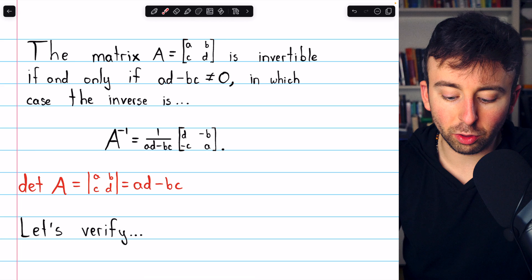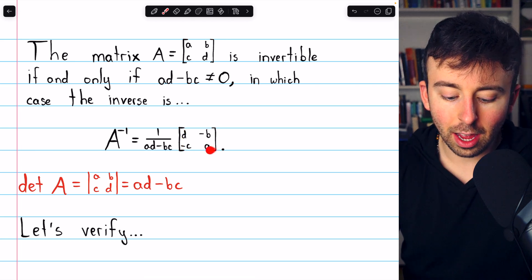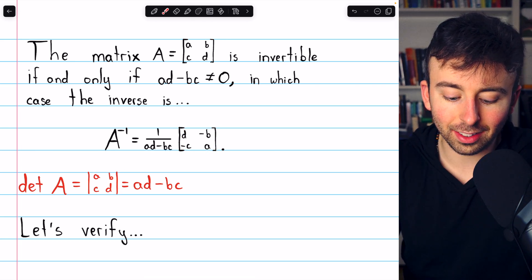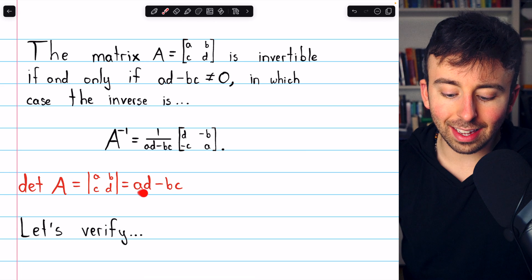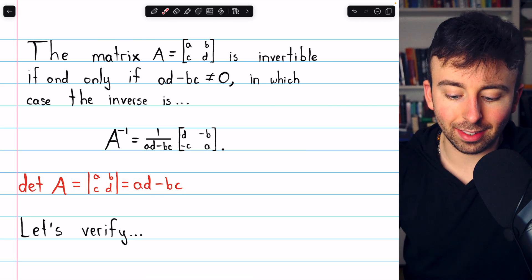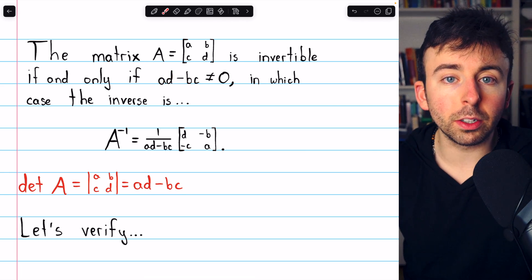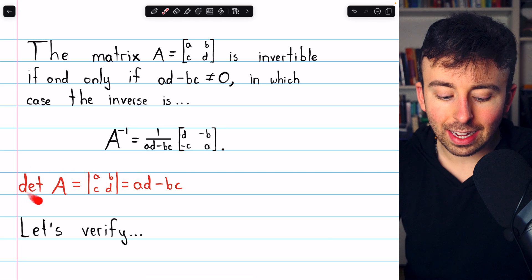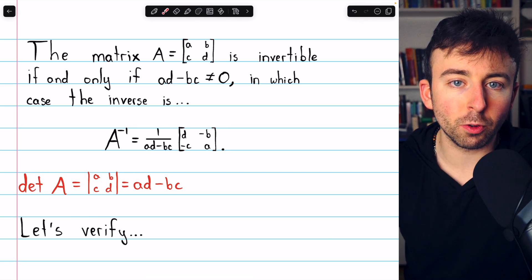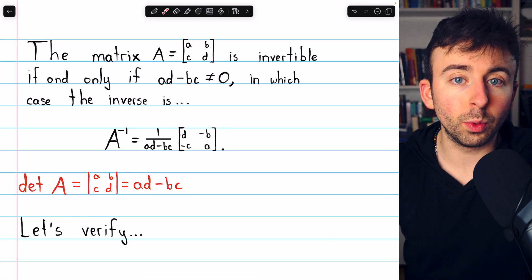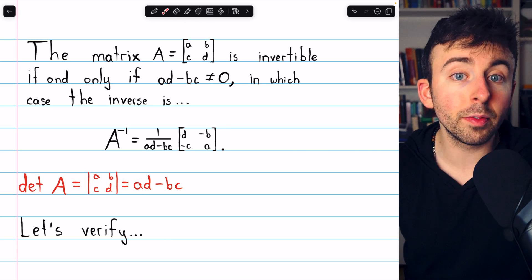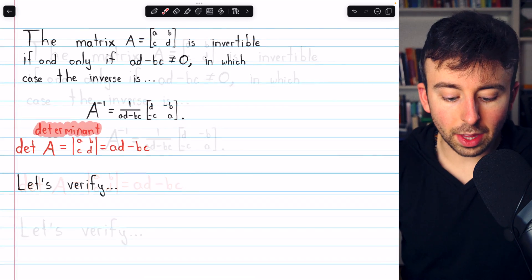Notice this notation is just like your matrix brackets, but without those little tails. And this, again, is AD minus BC. This part that is critical to finding the inverse is the determinant of the 2x2 matrix. Later in the course, we will see how to find the determinant of larger matrices.